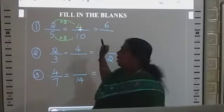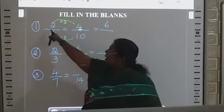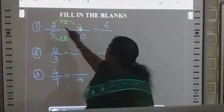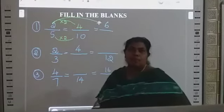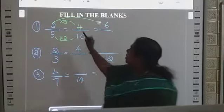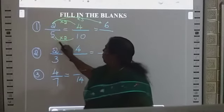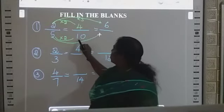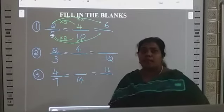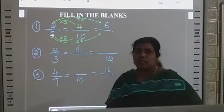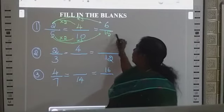Next: the denominator is missing but the numerator is given as 6. Check — 2 goes into 6 how many times? 3 times. So multiply by 3. The denominator: 5 times 3 is 15. So the answer is 15.